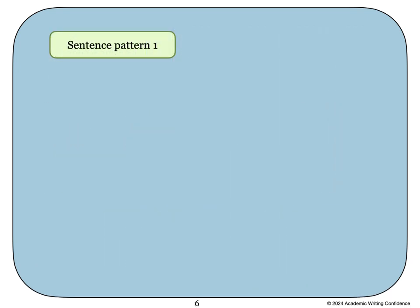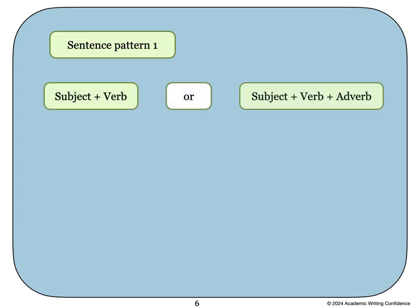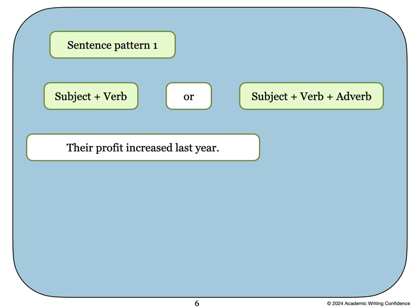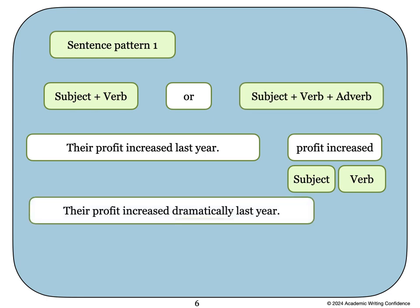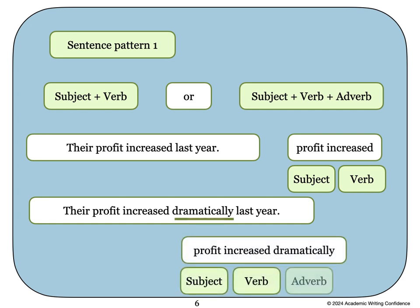There are some sentence patterns that can be useful in describing graphs and charts. The first pattern is to use a sentence that has a subject and a verb, or a subject plus a verb and an adverb. In this sentence, profit increased is the subject and verb. To write the second style of this pattern would look like this: Their profit increased dramatically last year. Here we've added the adverb dramatically to show more clearly how the numbers increased. This is the subject, verb, adverb pattern.